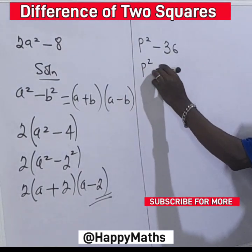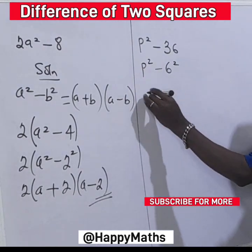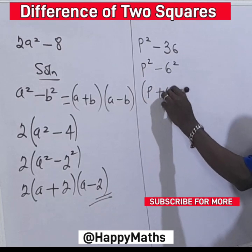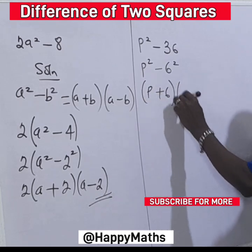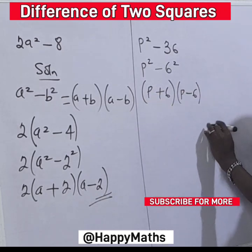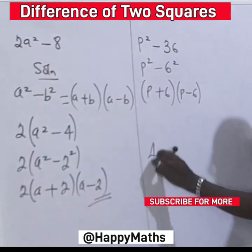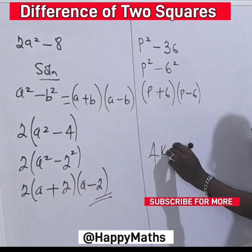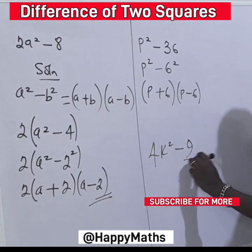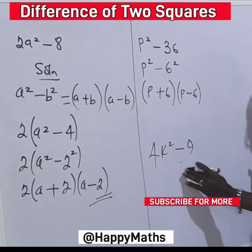Now for this one: p squared minus c squared, which is p plus c times p minus c. What is your thought about this? Solve it and drop your answer in the comment section.